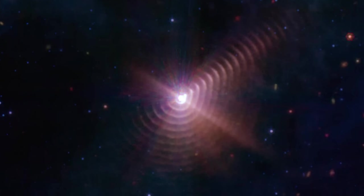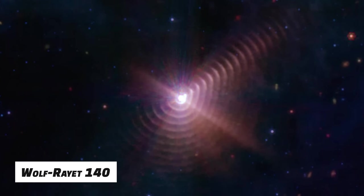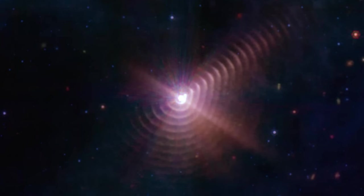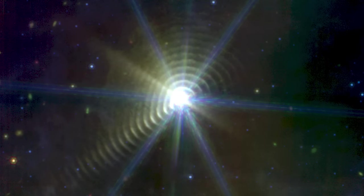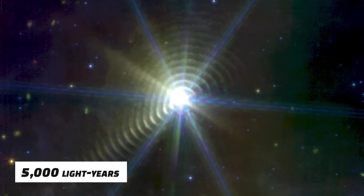This pair of stars, known as the Wolf-Rayet 140, produces dust rings approximately every eight years due to their orbit and interaction. This intriguing cosmological fingerprint lies around 5,000 light-years away.